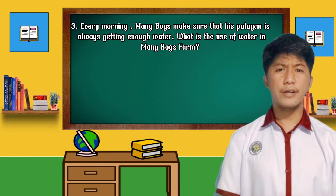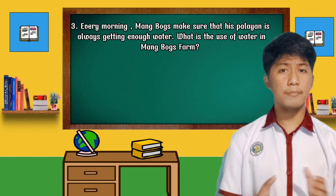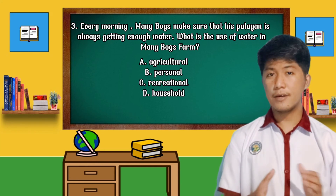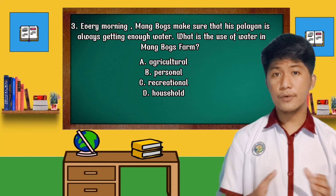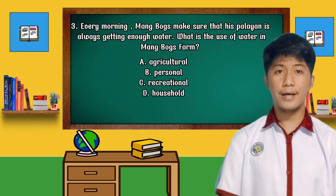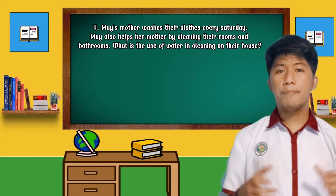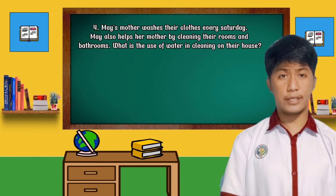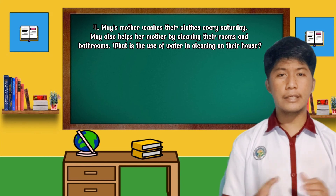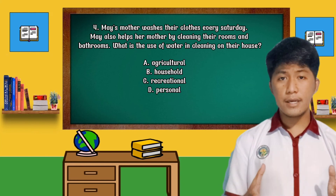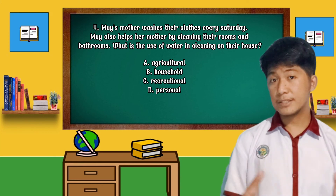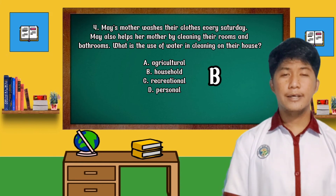Number 3: Every morning, Mang Bogs makes sure that his rice field is always getting enough water. What is the use of water in Mang Bogs' farm? A. Agricultural, B. Personal, C. Recreational, D. Household. If your answer is letter A, well done! How about this situation: May's mother washes their clothes every Saturday. May also helps her mother by cleaning the rooms and bathrooms. What is the use of water in cleaning their house? A. Agricultural, B. Household, C. Recreational, D. Personal. If your answer is letter B, you are correct.